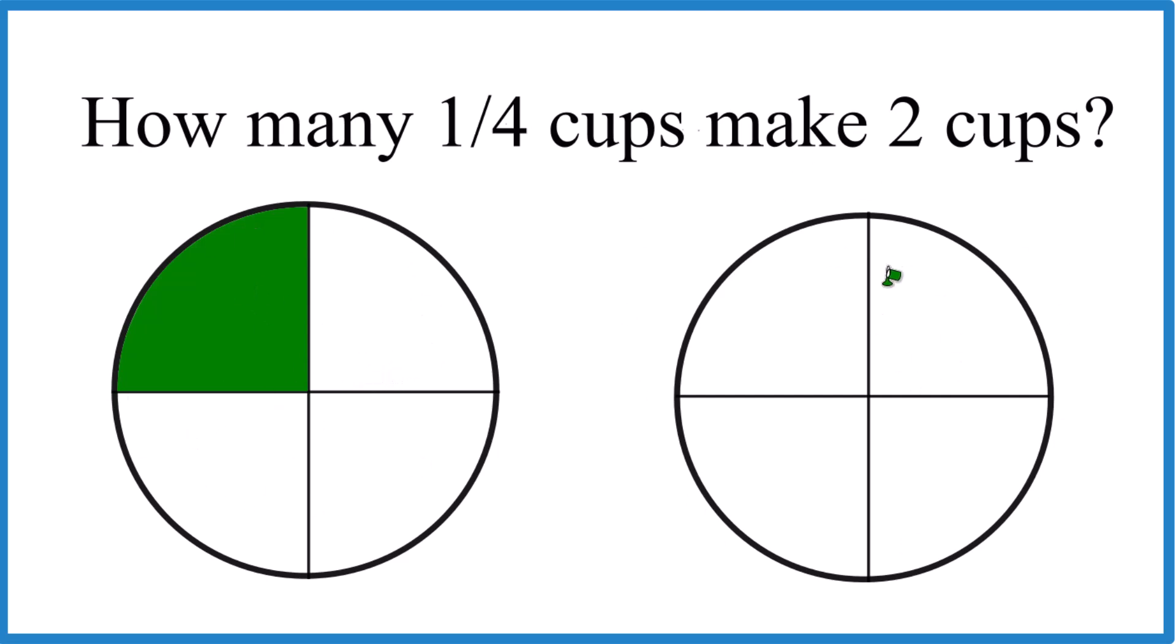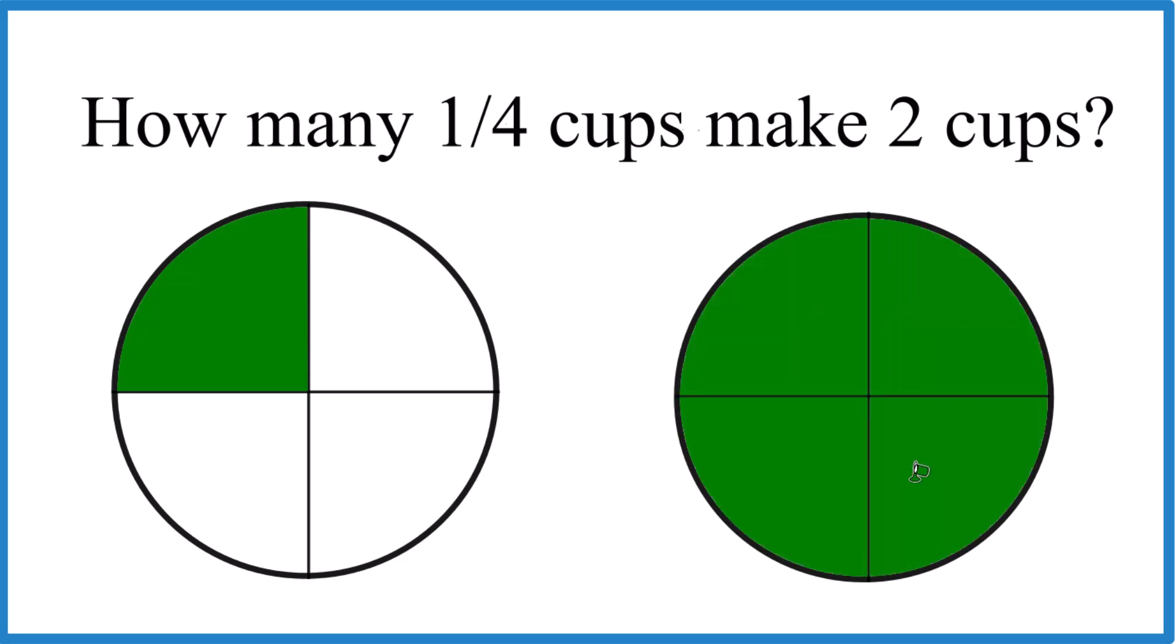So in order to have a full cup, we need four parts of four. One, two, three, four. That's one cup. So it takes four quarter cups to make one cup. Since we want two cups, four plus four is eight.